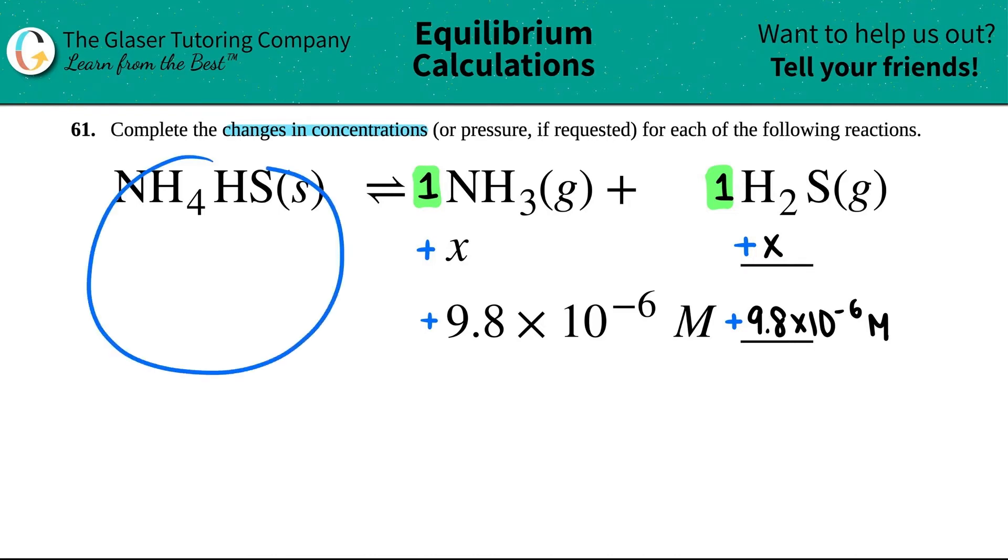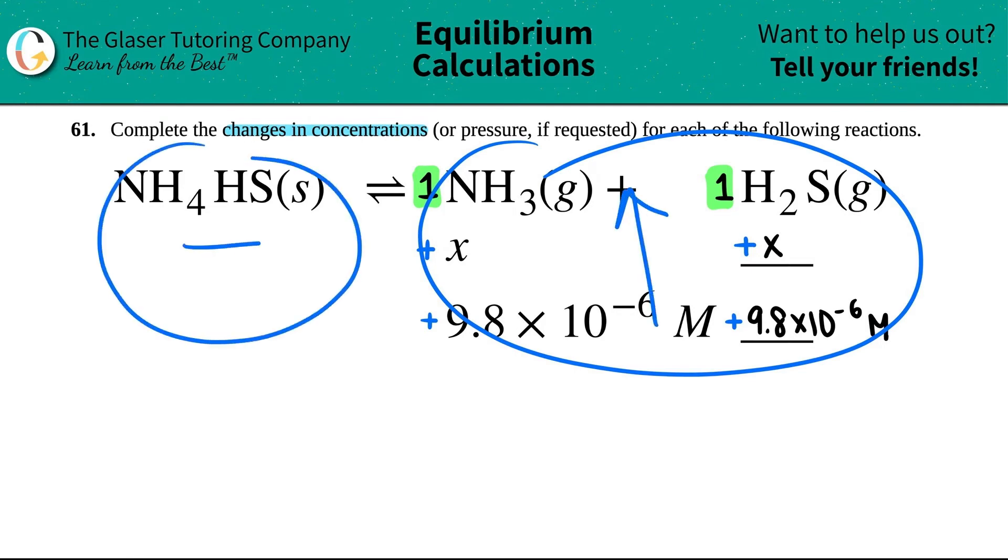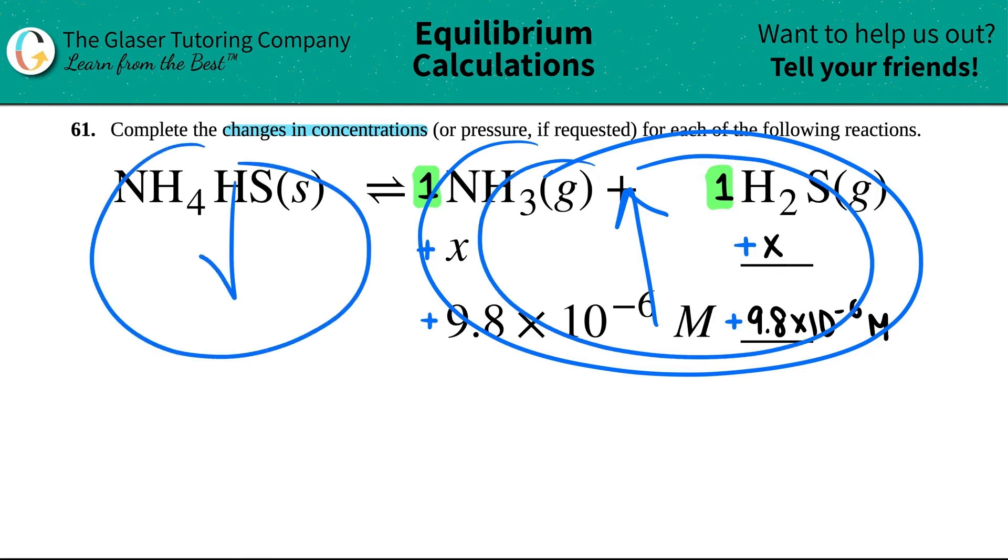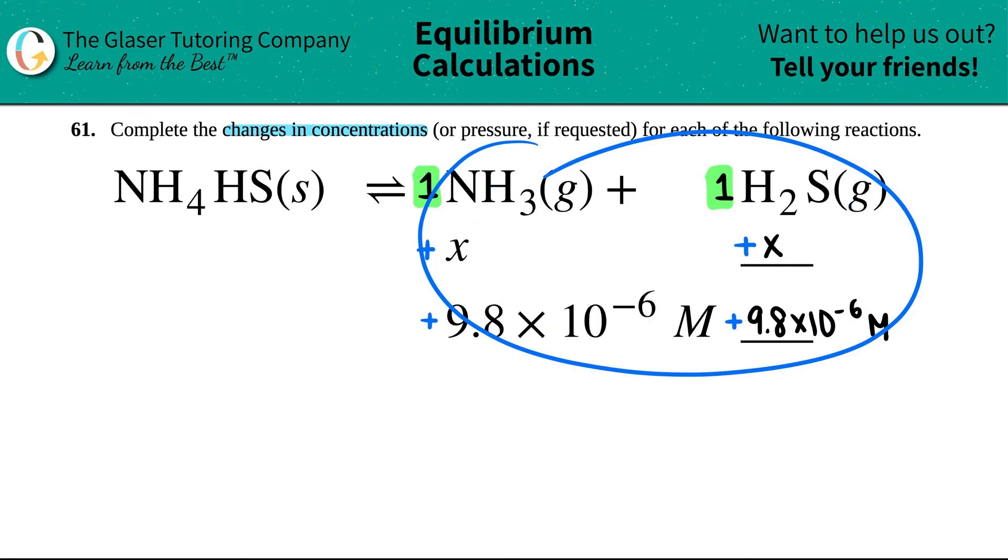I also want to say that we do not care about the solid, because remember, with solids, they're not in the equilibrium expression, right? No solids and liquids allowed, because there is no change in the concentration, aka the activity in the solid. But you might be saying, wait a minute Christina, if this is increasing, how are the reactants staying the same? You've always taught me that if one side increases, the other side drops, and you are totally correct. But what drops here? Not the concentration, just the mass. And since we don't care about mass in the K expression, that's why we don't worry about it.